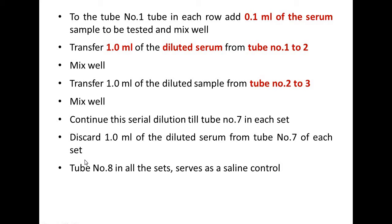To tube number one, add 0.1 ml of serum sample collected from the suspected individual. Transfer 1 ml of this diluted serum from tube one to tube two, mix well. Then transfer 1 ml from tube two to tube three. Continue this serial transfer through tube number seven.